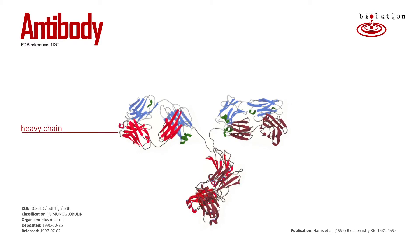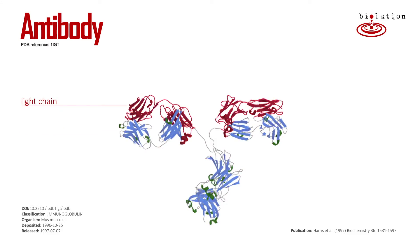Antibodies consist of four polypeptide chains. One pair of heavy chains, which are the long peptides that together form the FC and branch off with a flexible hinge to form one half of the FAB. The second half of the FAB is formed by the light chain.